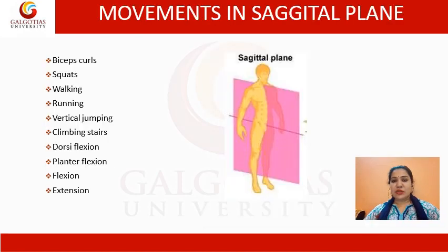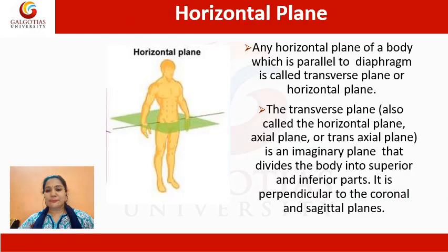Movements associated with the sagittal plane are bicep curls, squats, walking, running, vertical jumping, climbing stairs, dorsiflexion, plantarflexion, and extension. Moreover, all flexion and extension movements are examples of movement in the sagittal plane.